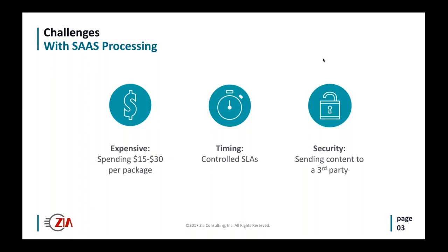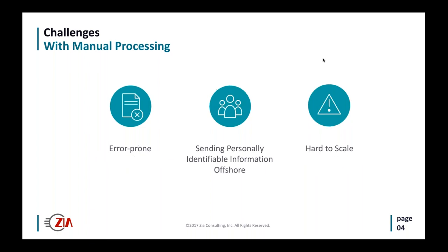The challenges with manual processing — and more people than you'd think are still doing this — come down to errors. People can make mistakes due to distraction, stress, or exhaustion. They can misclassify documents, lose documents, and fat-finger incorrect information. Quality goes down with volume. People will always be part of the process, but they should be dealing with exceptions and decisions.